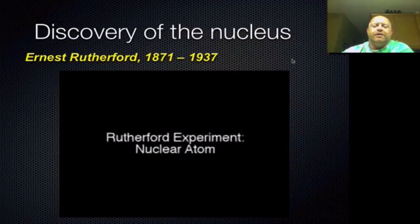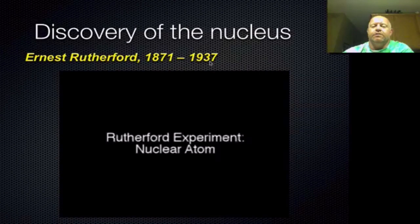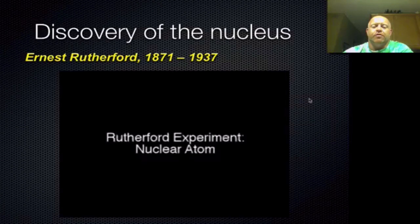The next key piece discovered was by Ernest Rutherford. Again, we're working in the late 1800s and early 1900s — this was done after the electron. The next thing to be discovered was the nucleus of the atom. To do that, Rutherford had to run an experiment using gold foil. Here's a little video on his experiment.